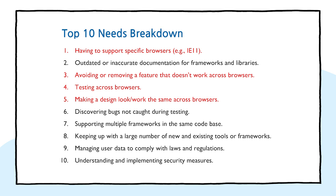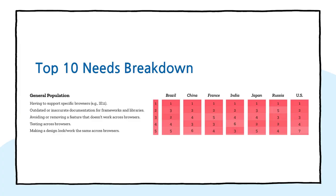One of the biggest strengths of the web is that there is no single entity controlling the platform, but that doesn't come for free. Web developers and designers are frustrated by not being able to use features, having to find workarounds, fiddling with browser differences, and by the difficulty of verifying that something that works in one browser won't break in another. It was a bit of a surprise that the top five issues were extremely stable between very different markets — China, India, Japan, the US, or France — all revolving around web compatibility and interoperability.